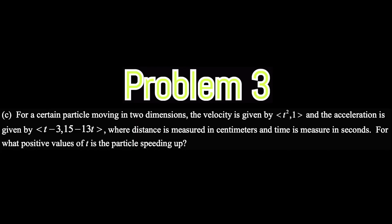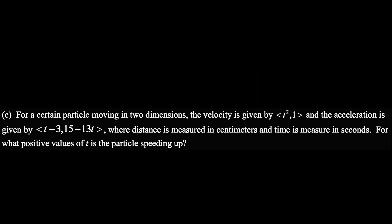Alright Ben, don't trip. Please tell me you know how to run. For a certain particle moving in two dimensions, the velocity is given by (t squared, 1) and the acceleration is given by (t minus 3, 15 minus 3t), where distance is measured in centimeters and time is measured in seconds. For what positive values of t is the particle speeding up?